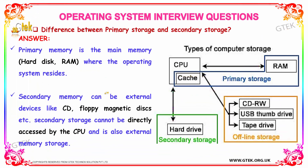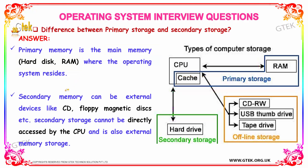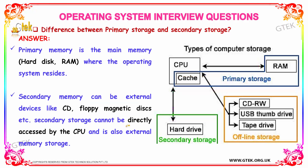What is the difference between primary storage and secondary storage? Primary memory is your main memory, which includes your RAM, and that is where your operating system resides. Secondary memory consists of external devices like CDs, floppy disks, and magnetic disks. Secondary storage cannot be directly accessed by the CPU — it is an external memory storage.